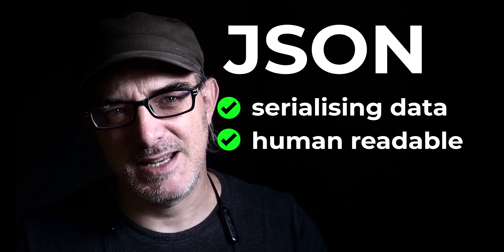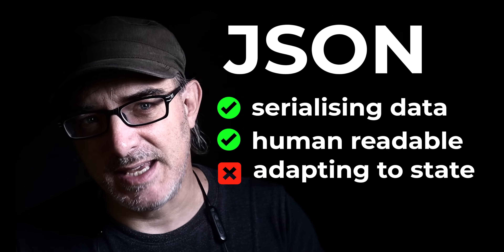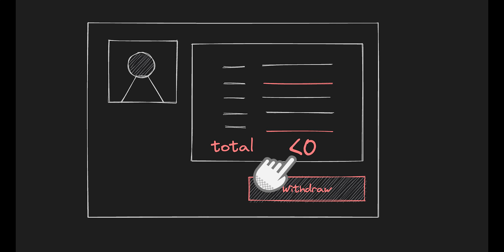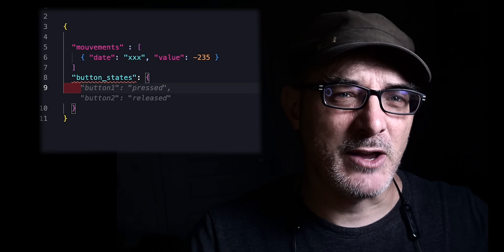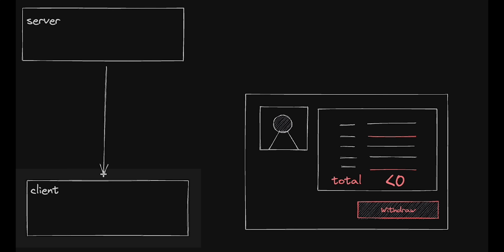JSON is excellent at serializing data in a human-friendly way, but you expect that data to follow a fixed shape — meaning JSON won't change shape based on the state. Carson uses the example of a bank account interface where the 'draw money' action would be disabled based on how much money is in the account. You and I can easily imagine how we could wrangle the JSON to include that information, but the default reflex would be to set up some logic on the client side to adapt to the data.